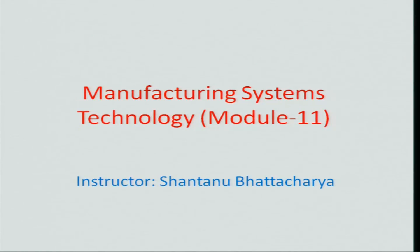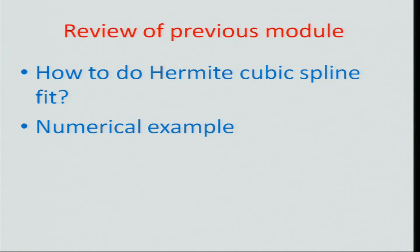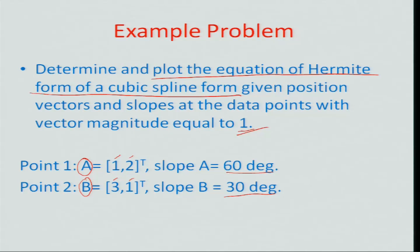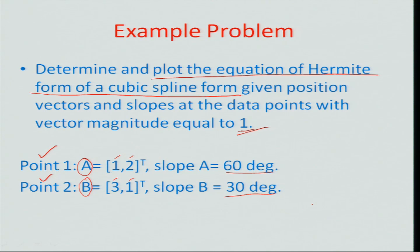Hello and welcome back to this 11th module on manufacturing systems technology. We were discussing in the last lecture how to do Hermit cubic spline fit on situations when you have multiple points and at least two end points to which a curve needs to be fitted, and also the slopes at those ends. We were formulating a numerical problem where there are two points whose coordinates and slopes are given, with vector magnitude of the slope equal to 1.